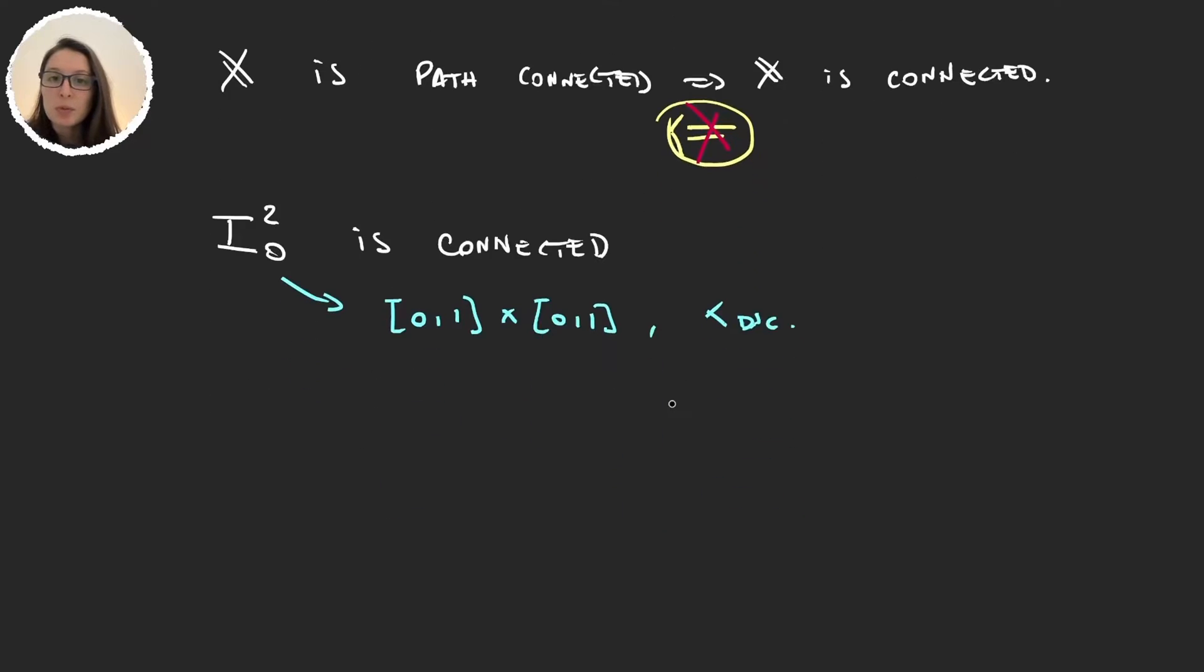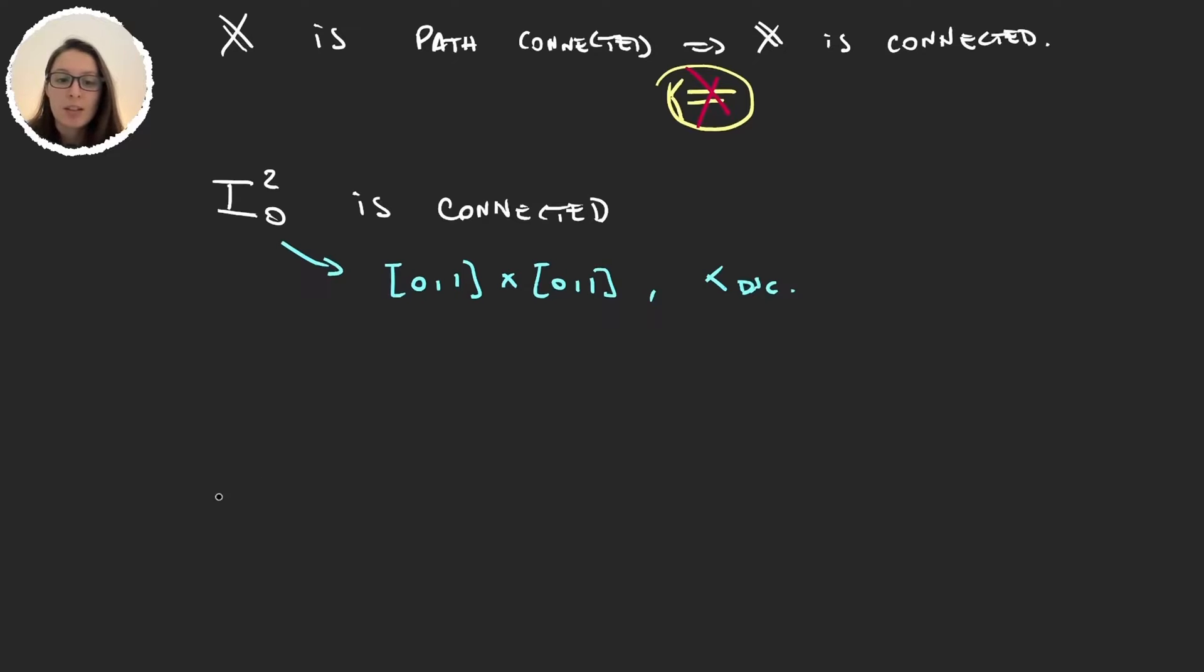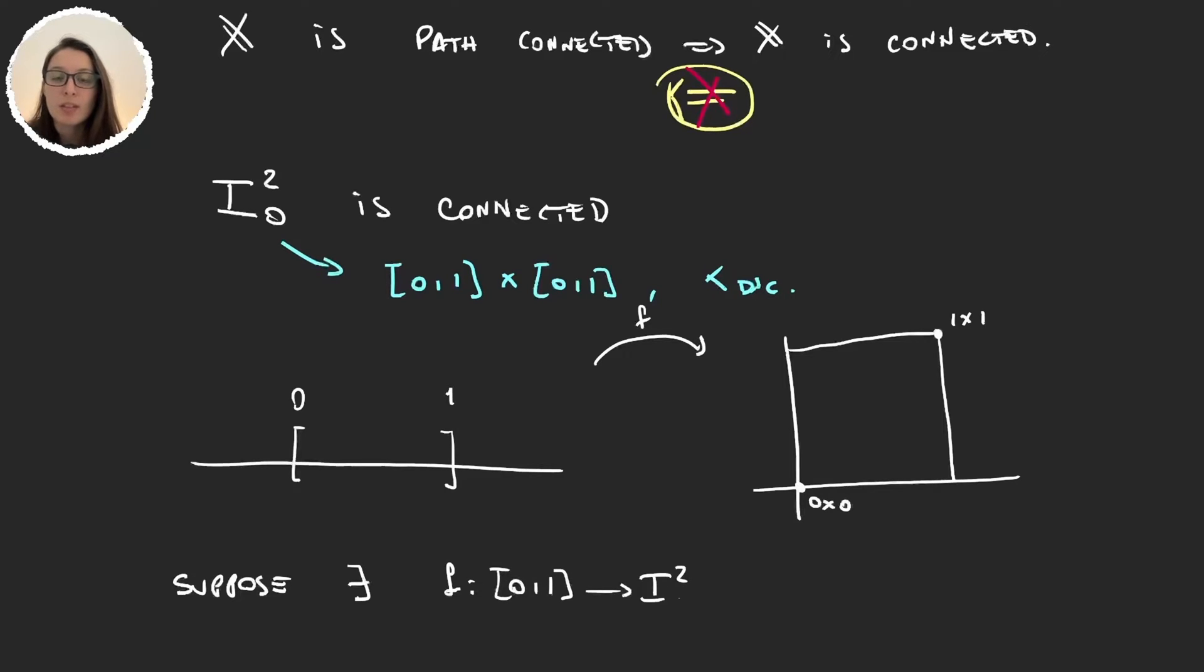For this we will suppose that it is connected and we will take a particular pair of points. We will have a function from the interval [0,1] continuous that goes to the unit square and let's say that my two particular points x,y that I'm going to join with a path are (0,0) and (1,1). So let's suppose there exists a function that joins (0,0) with (1,1).